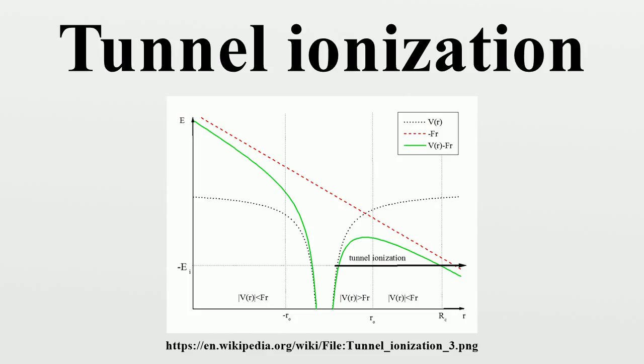Obviously this phenomenon is forbidden by classical laws, as in the classical picture an electron does not have sufficient energy to escape. When the atom is in an external DC field, the Coulomb potential barrier is lowered and the electron can tunnel through the barrier.